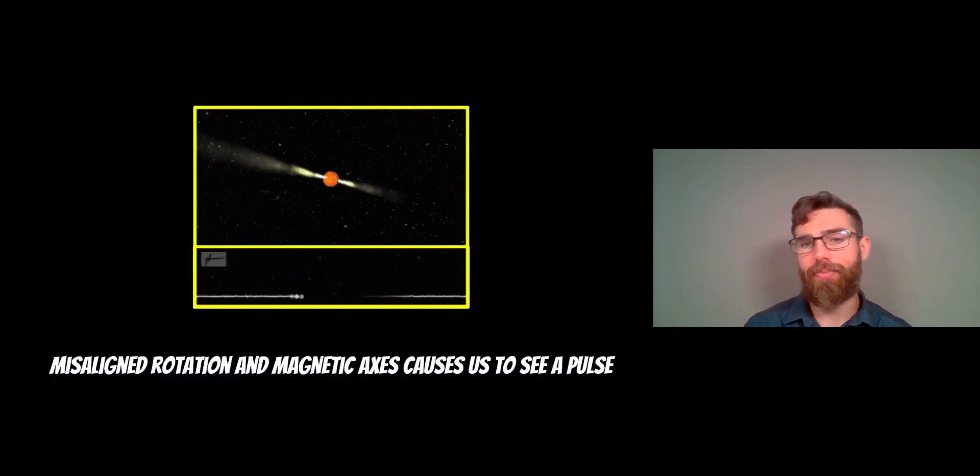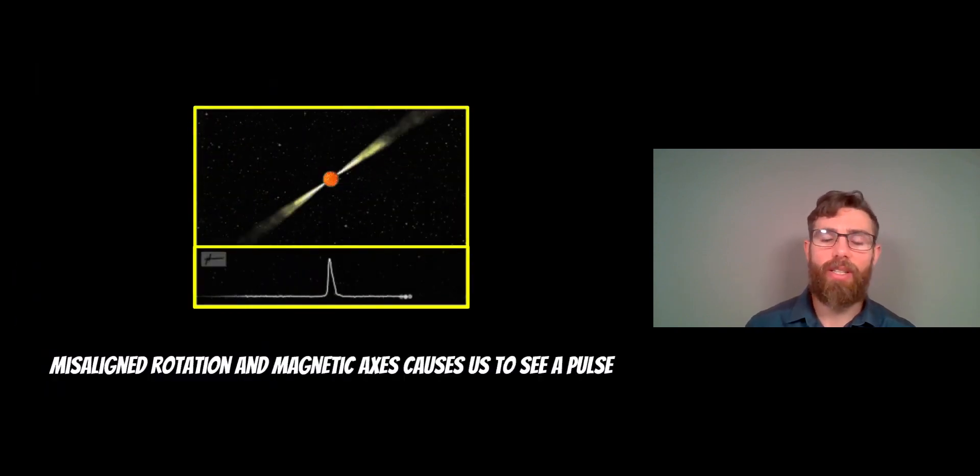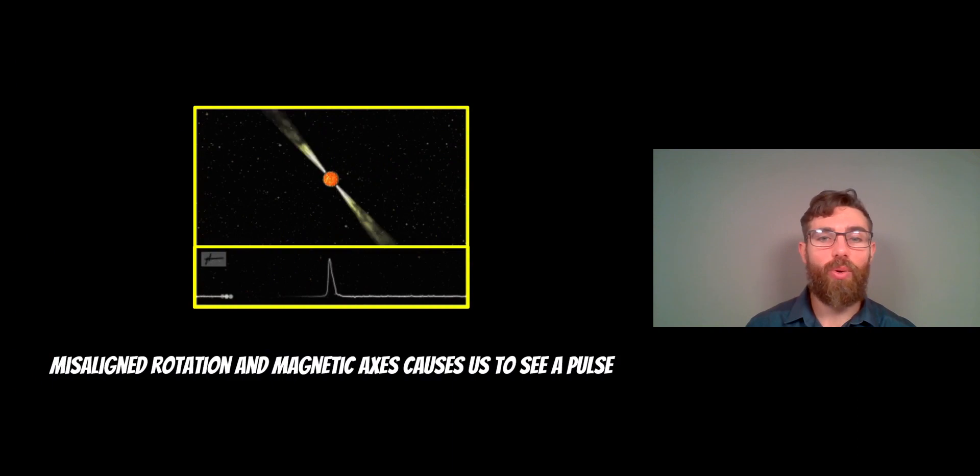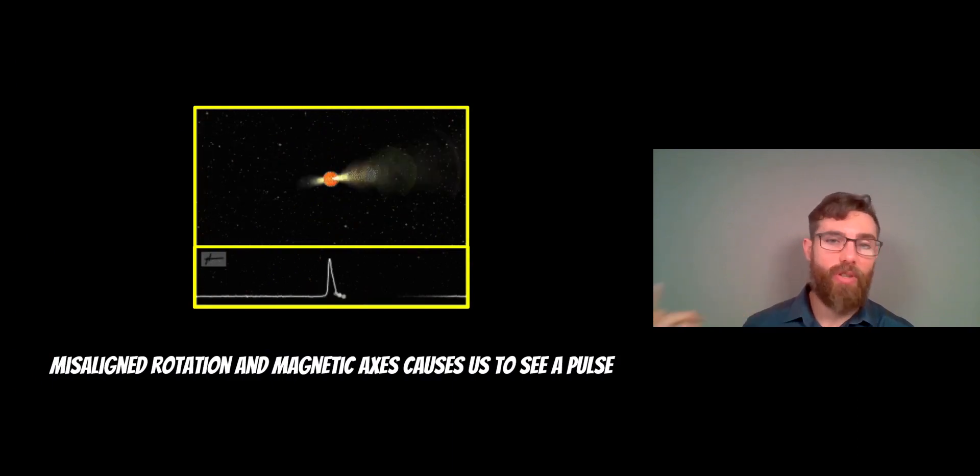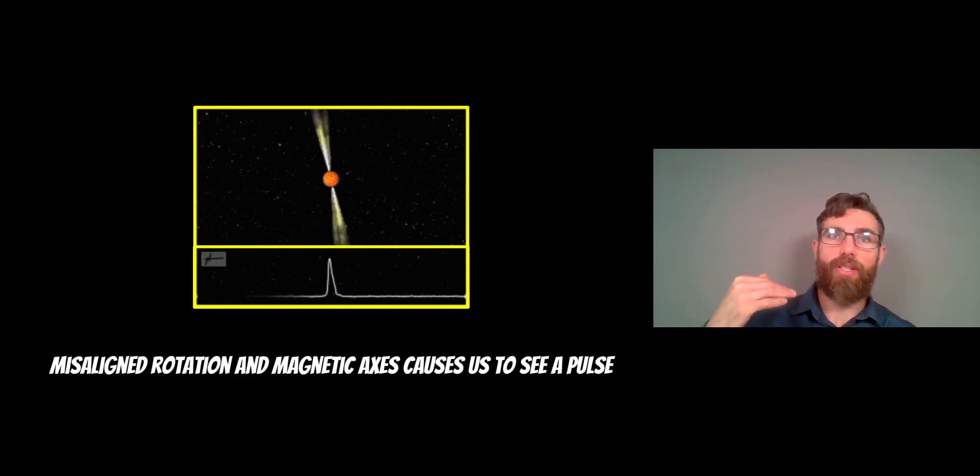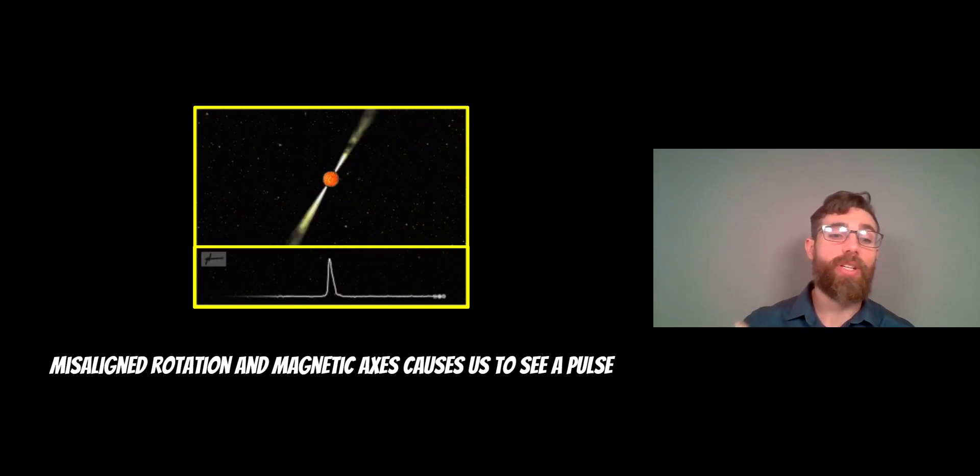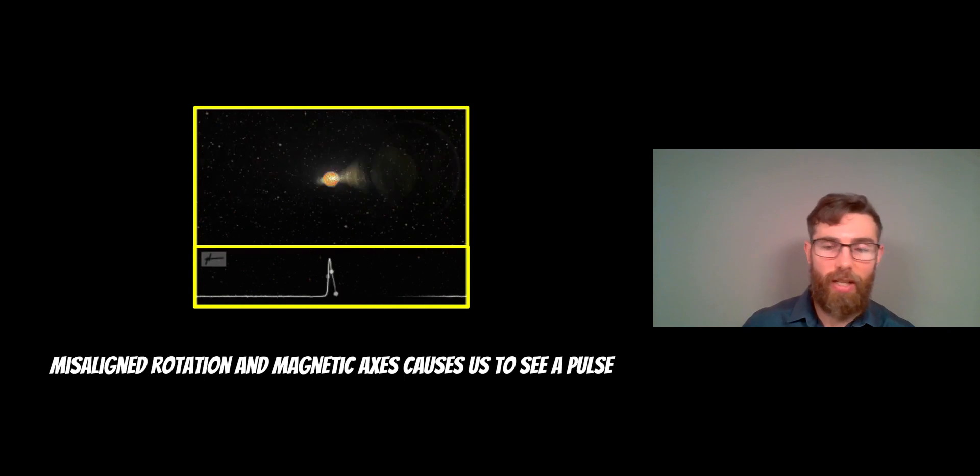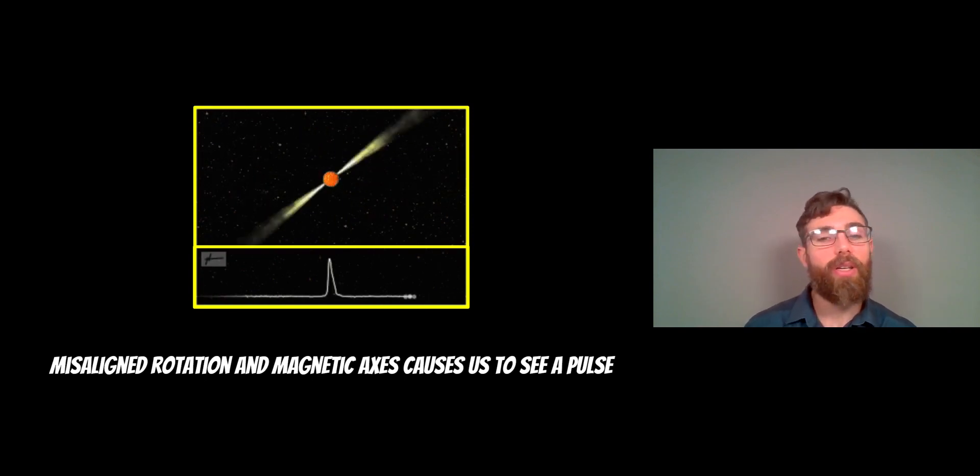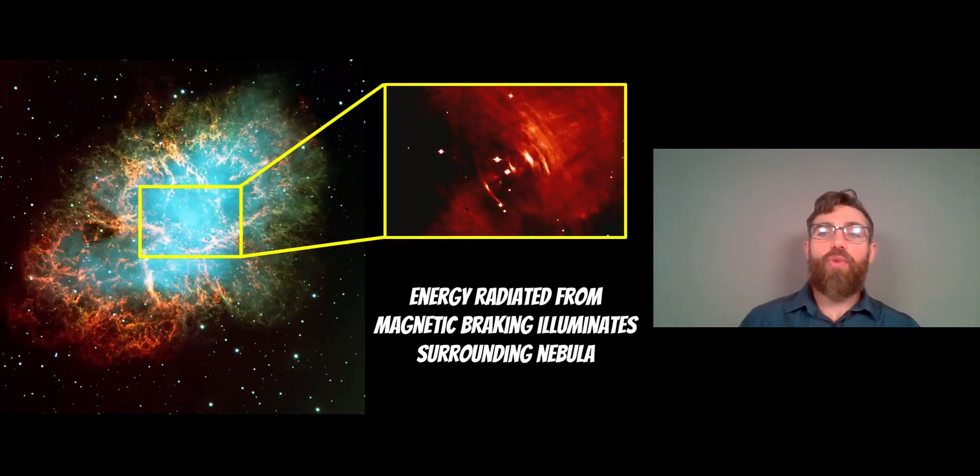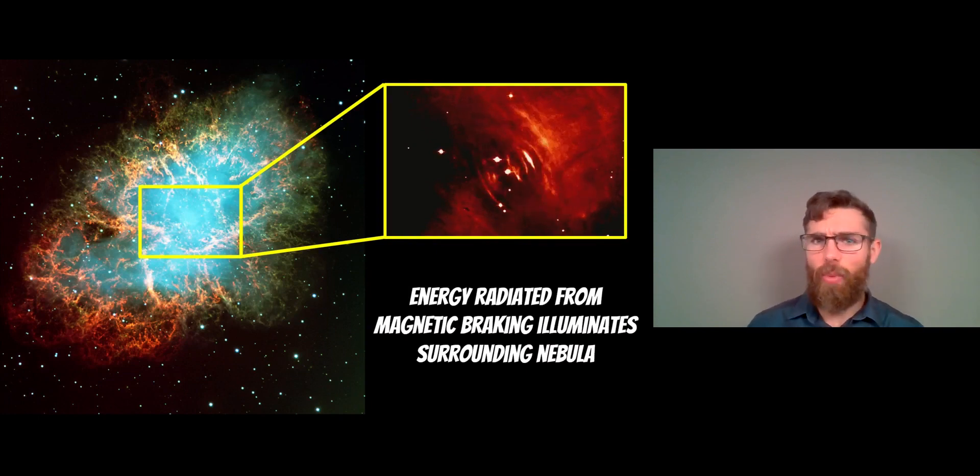They slow down, causing a braking on their rotation, and this is what we see. You've got those beams at the magnetic poles, and as it rotates very fast, depending on how it's orientated to us, we see a sudden increase in energy which is our pulse. We can work out the rotation period by the time between each pulse.